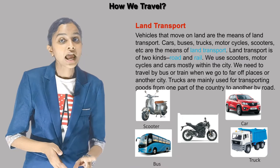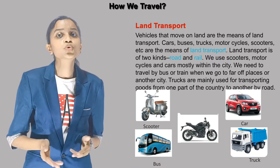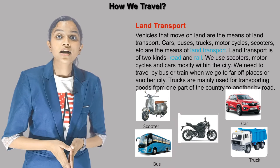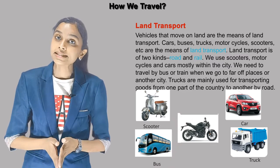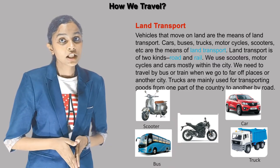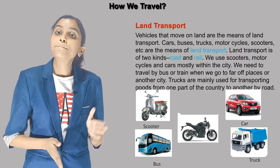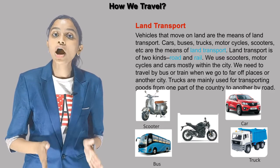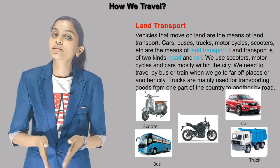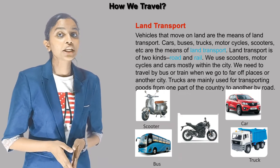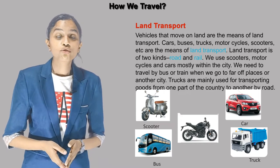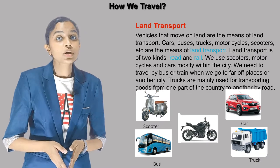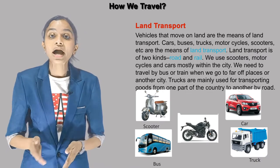Land transport is of two kinds — road and rail. We use scooters, motorcycles and cars mostly within the city. We need to travel by bus or train when we go to far-off places or another city. Trucks are mainly used for transporting goods from one part of the country to another by road.